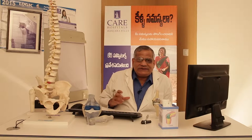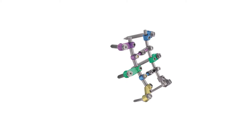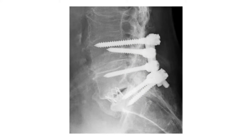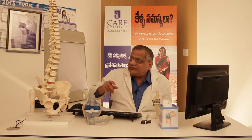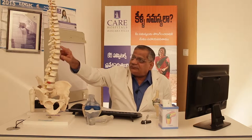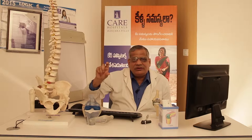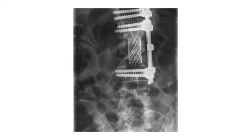Similarly, in spondylolisthesis — a congenital deformity — we use instrumentation to reduce the displacement and fix the spine. Similarly, in TB spine where the entire bone is destroyed, we remove the destroyed bone and replace it with a cage so that the length of the spinal column is maintained.